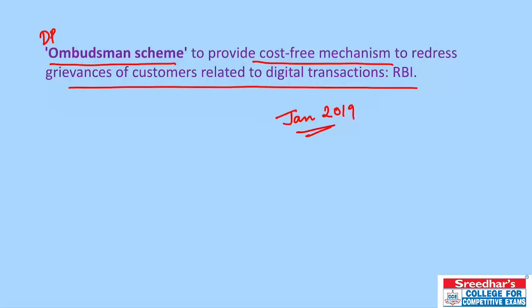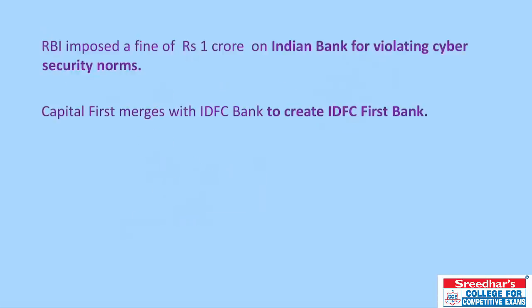As discussed in a previous video, the RBI released a report saying cyber frauds have doubled compared to previous years. The Digital Payments Ombudsman scheme is an initiative to address this issue. It is going to be cost-free to redress grievances of customers relating to digital transactions. The RBI has also imposed a fine of one crore on Indian Bank for violating cyber security norms.